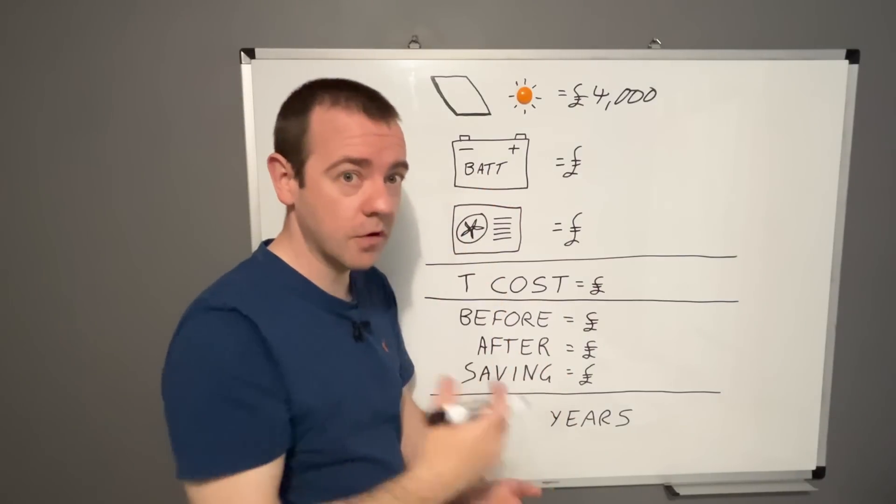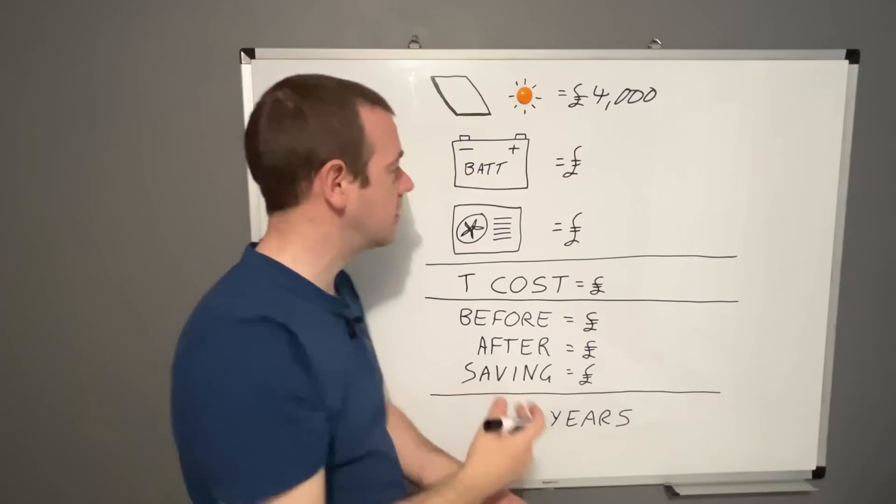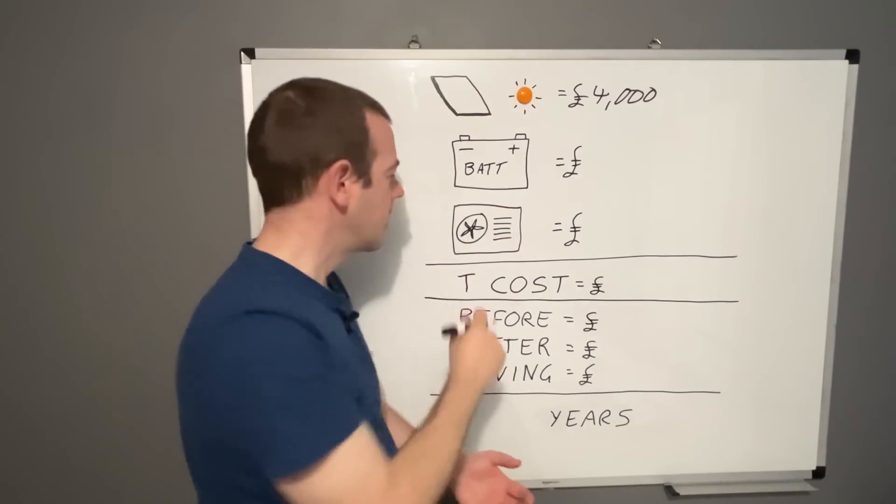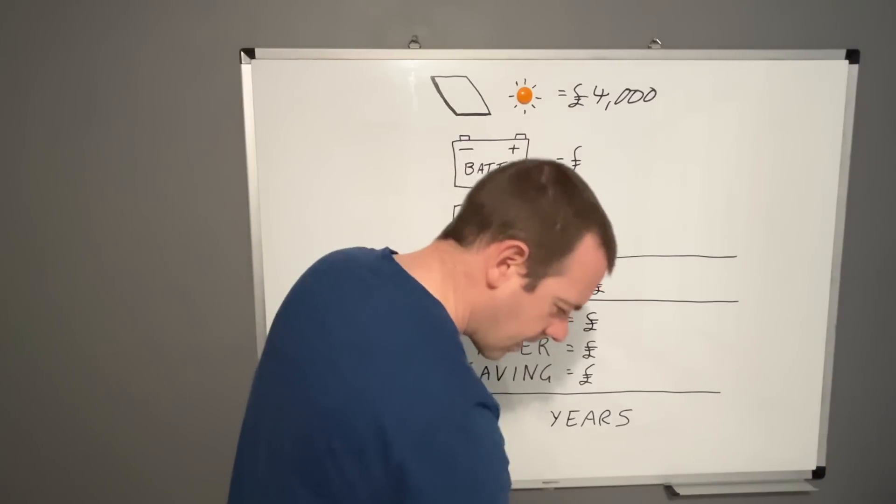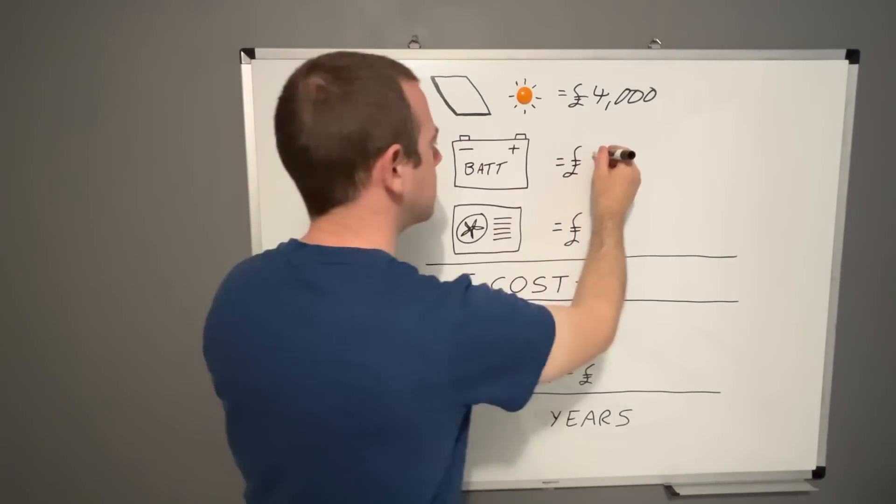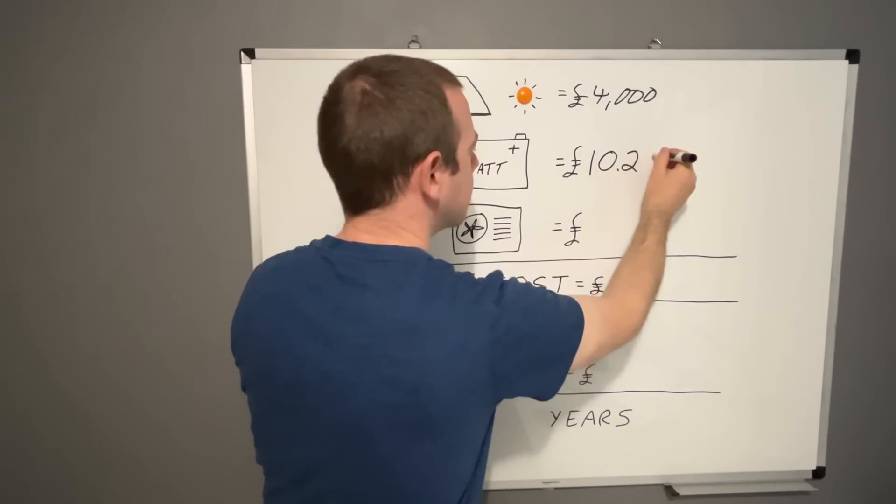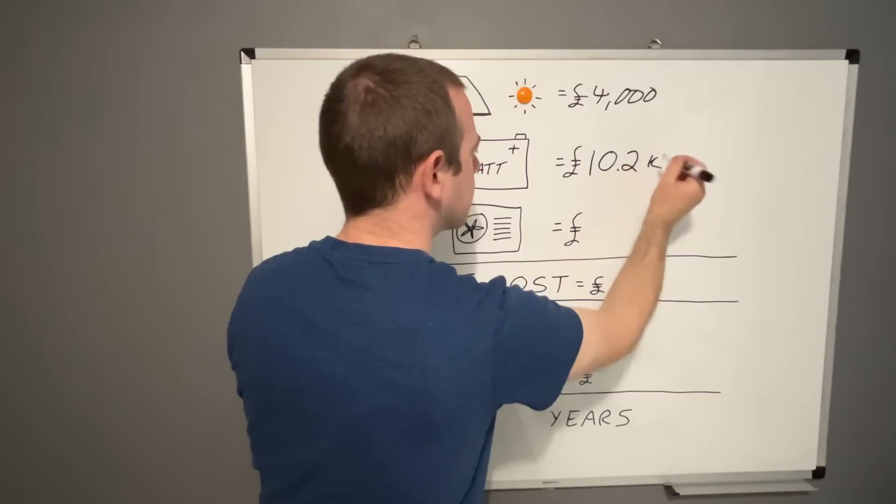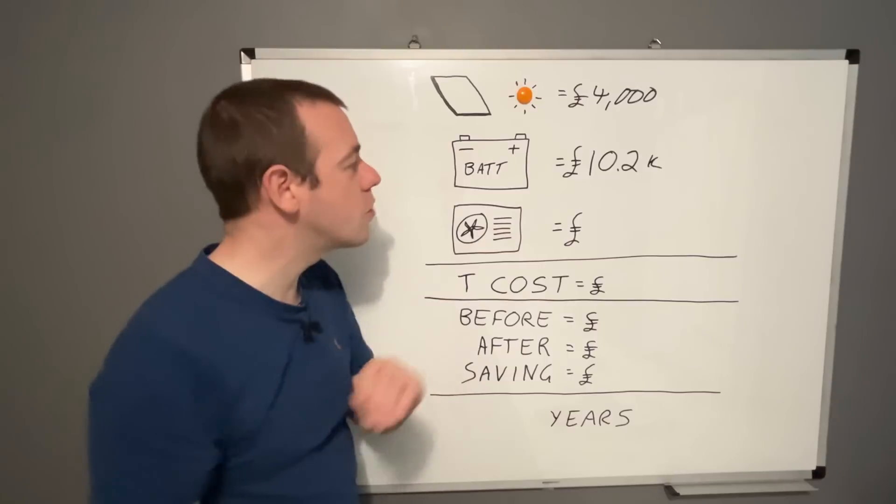So again, a battery now with the vat removal is probably a better alternative if you can only do one at a time. Right. So how much was the battery? That cost us or would cost us right now to get the same system. That's meant to be a K. £10,000. So that's the big one.